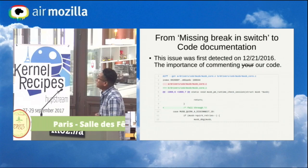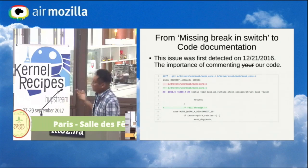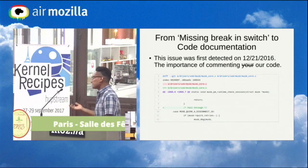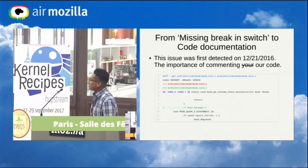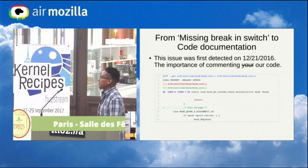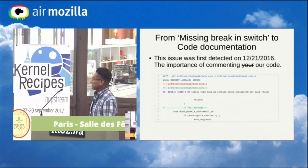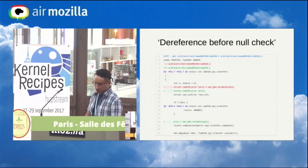The next example: Coverity reported a missing break in switch again. This is a very trivial fix — actually it's not a fix because it's not a functionality issue. But something important to notice here is that it is important to document the code, because at the end it's not your code, it's our code. In my case, it could have saved a lot of time, noticing immediately that it was a false positive and the code had to fall through.